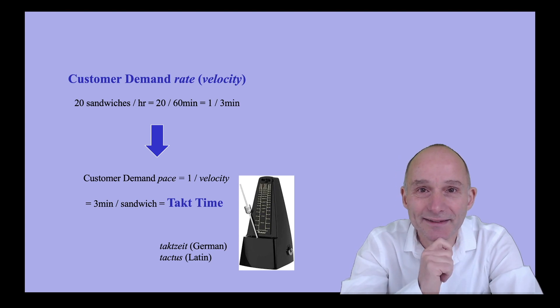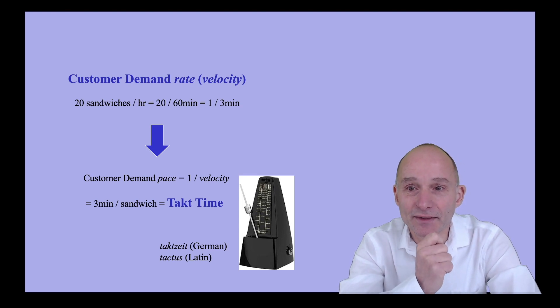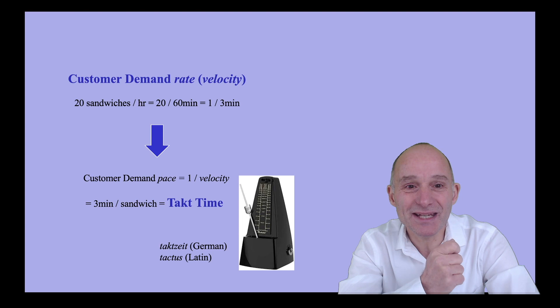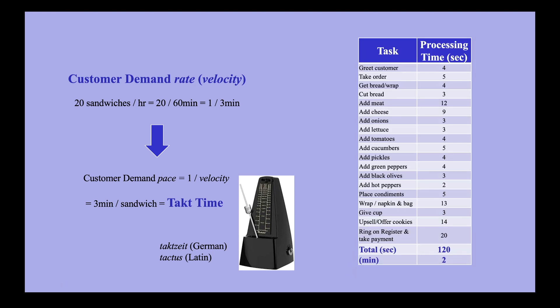To see that distinction, assume that the sandwich shop has one operator. To be able to stay synchronized with the demand, that operator must be able to complete all the tasks involved with one sandwich in 3 minutes. Let's look at the tasks of such operator. The total processing time is 120 seconds, so the operator has to work 2 minutes out of the 3-minute takt time, and would be utilized 66%.